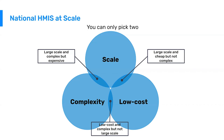Conversely, if you want low cost, then you need to go with lower scale or lower complexity. Ideally there would be a sweet spot where we have high scale, high complexity, and low cost. But as we've seen across countries that have developed a national health management information system, a compromise has to be made at some point — either you pay a lot of money to get high scale and very complex, or you draw down the scale or decrease the complexity.